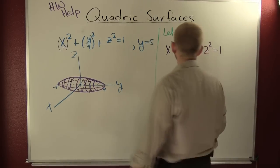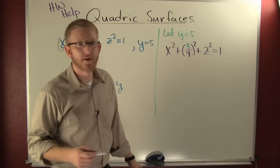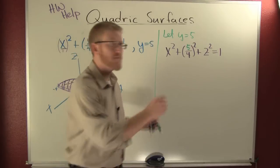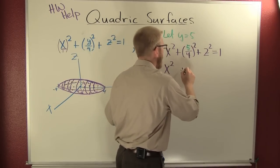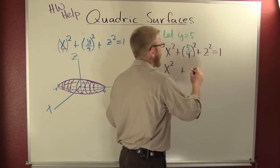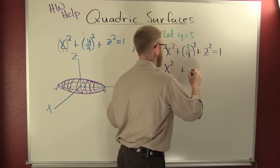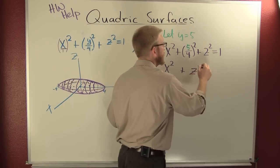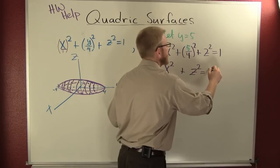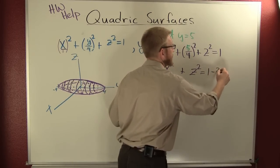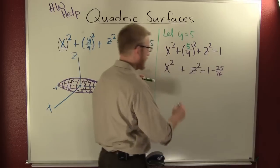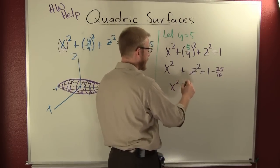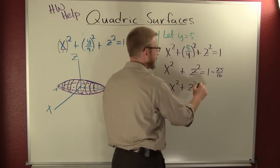But wait, there's more. Let's clean it up a little bit. Don't mind me stepping skips. You should be doing this, working it out at home. Well what am I doing? I'm adding that 25 sixteenths, or the opposite of it, to both sides. So this is 1 minus 25 sixteenths. So then x squared plus z squared is...